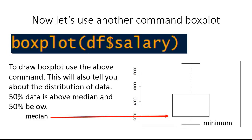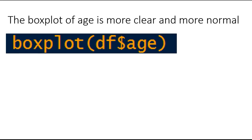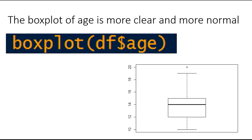What do these two whiskers represent? This one represents the minimum salary and this one represents the maximum salary. Now let's draw the boxplot for age, which is more clear. So boxplot, extract the age from the data frame, and it has been divided into four different quartiles very clearly.